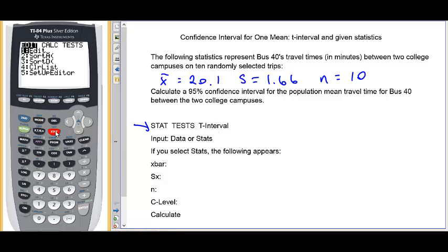So over to the calculator, stat tests, scroll down to find the t interval, press enter, and we need to make a choice between the data menu and the statistics menu.